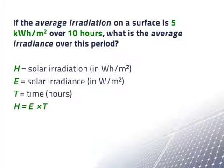We know that H, the irradiation, is equal to the irradiance times the time in hours. So solving for E, the irradiance is equal to H over T.